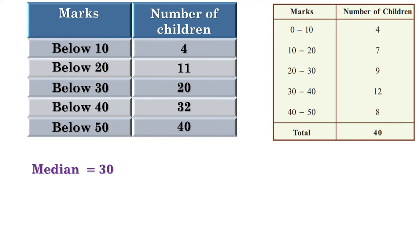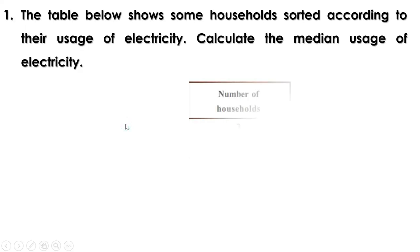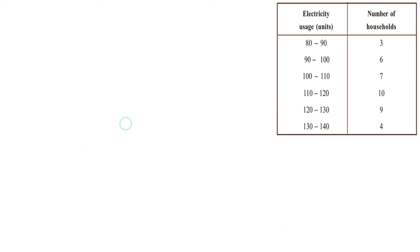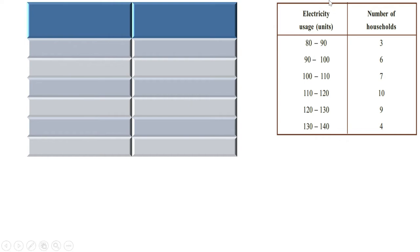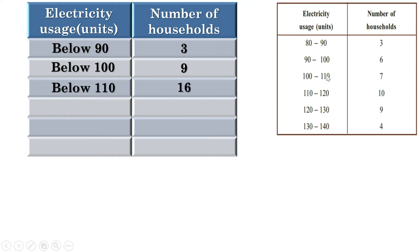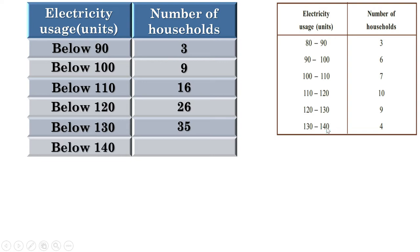Now let us do the problems on pages 254 and 255. First problem: the table below shows some households sorted according to usage of electricity. Calculate the median usage of electricity. Preparing the cumulative frequency table — headings are electricity usage and number of households: below 90 there are 3; below 100 there are 9; below 110 there are 16; below 120 there are 26; below 130 there are 35; below 140 there are 39 households. Total number of households is 39 — an odd number. Therefore there is only one term at the middle, and the 20th term is at the middle.